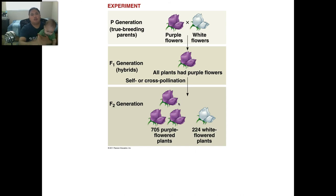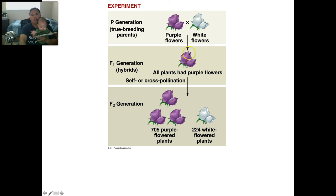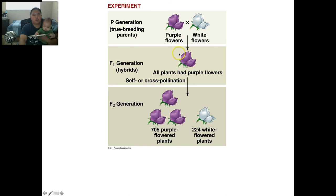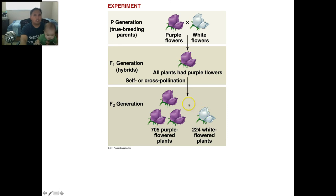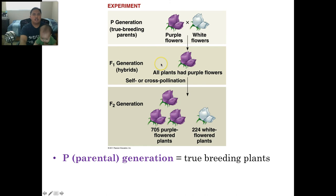In Mendel's experiments he used pea plants, but here's an example with flowers. If you cross a purple flower and a white flower, all their kids were purple — not pink, not half purple, just purple. When you then self-pollinate or cross-pollinate those offspring, some were purple and some were white. That's really strange because all the parents were purple. This tells us there has to be a dominant and recessive allele — you just see what's being expressed. The P generation means parents; F1 and F2 are the offspring generations.